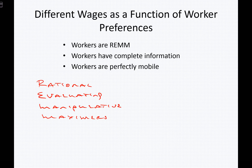Rational is a term we apply to all economic agents, including workers. Evaluating — the E in REM — stands for the fact that workers, as all economic agents, are constantly evaluating their decisions and choices. You're doing so as you listen to this segment. At some point, you decided to work on your labor economics course, clicked on this segment, and evaluated your choices about what to do with your time — deciding this would give you greater overall utility than doing something else.